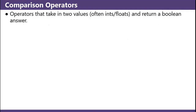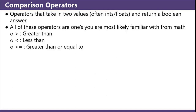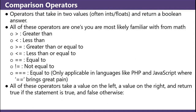Comparison operators: operators that take in two values, often ints and floats, and return a Boolean answer. All these operators are ones you're most likely familiar with from math: greater than, less than, greater than or equal to, less than or equal to, equal to, not equal to. Triple equals — equals to — is only applicable in languages like PHP and JavaScript where double equals brings great pain. All these operators take a value on the left, a value on the right, and return true if the statement is true and false otherwise.